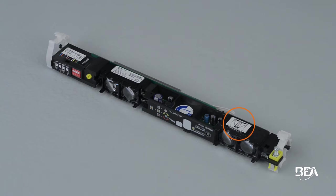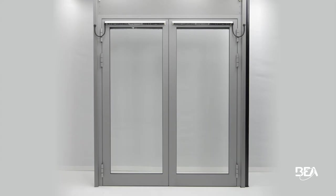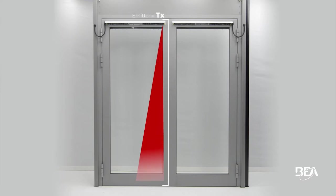The emitter is marked with a TX label. The receiver is the optical lens next to the dip switches. The emitter always needs to be placed on both edges of the door.